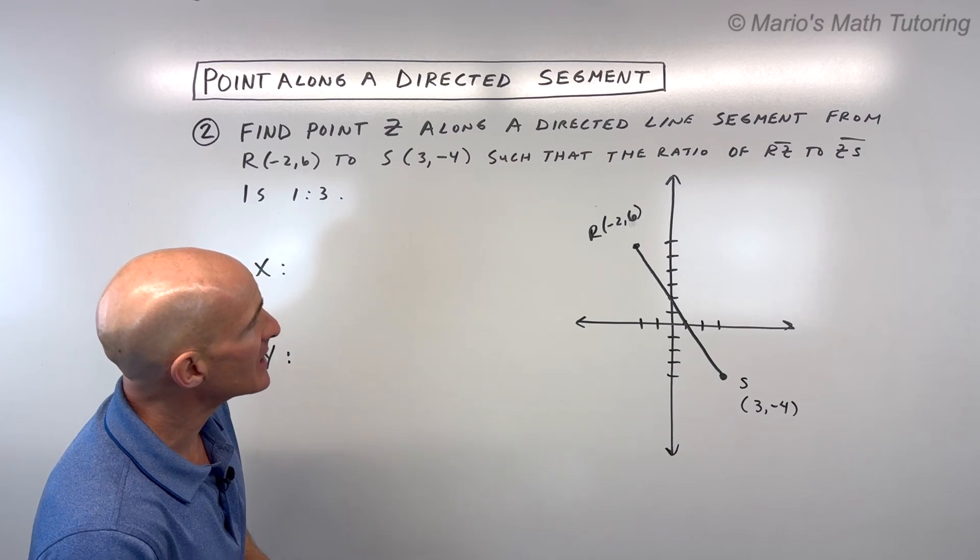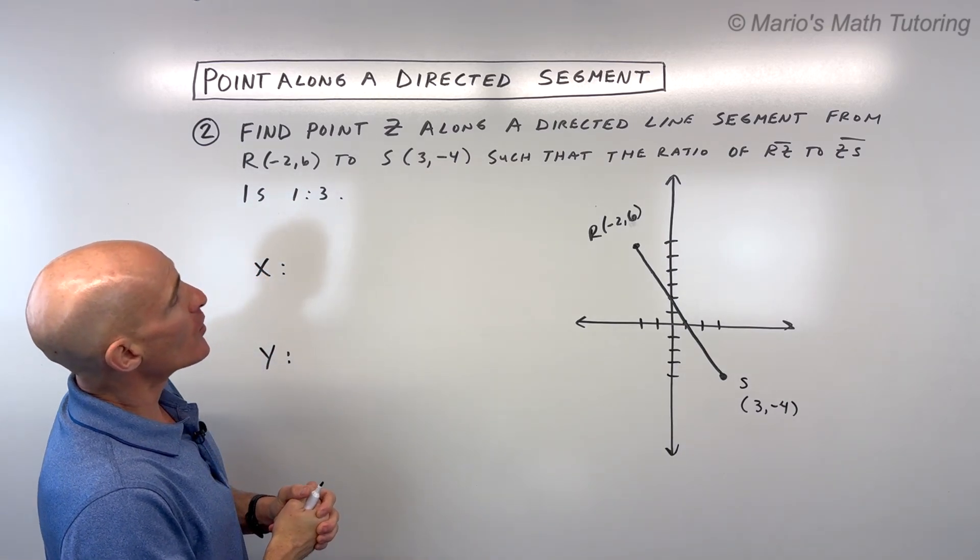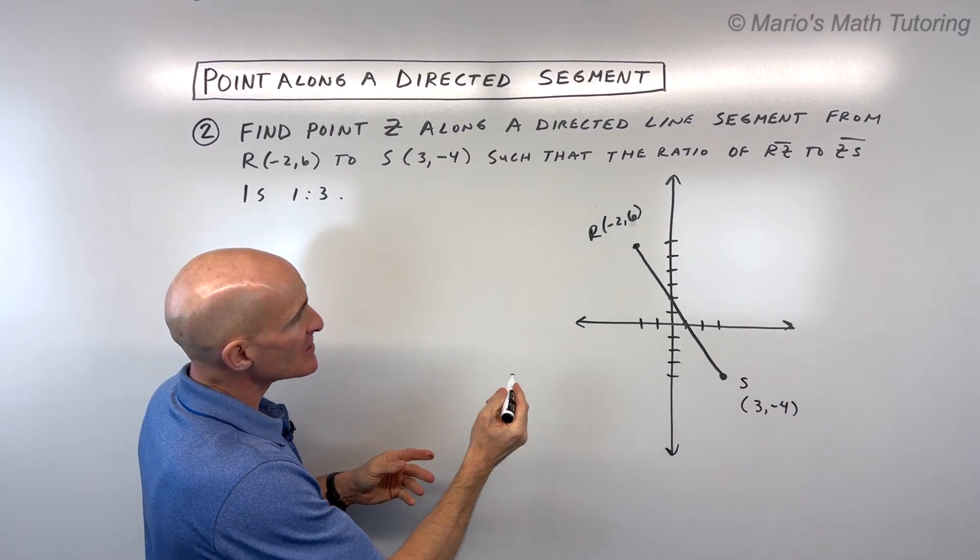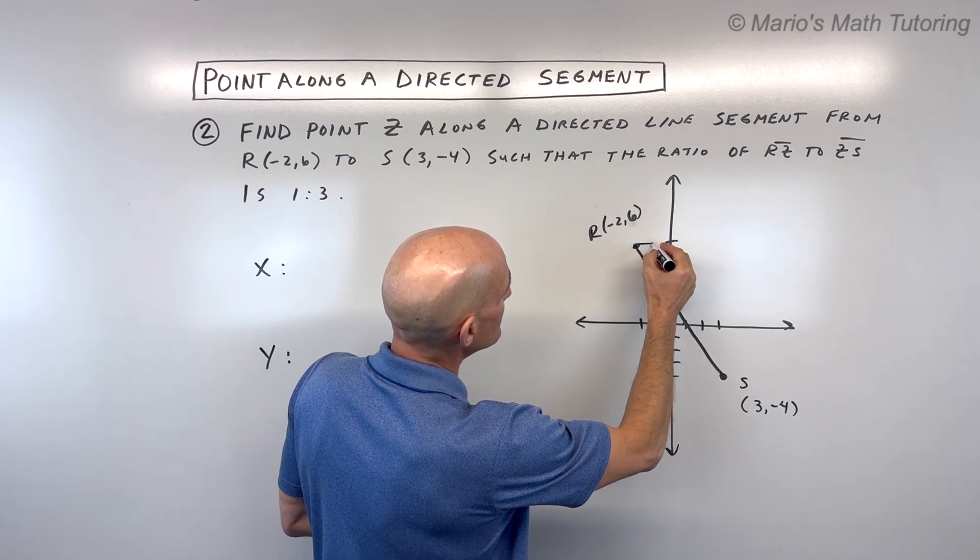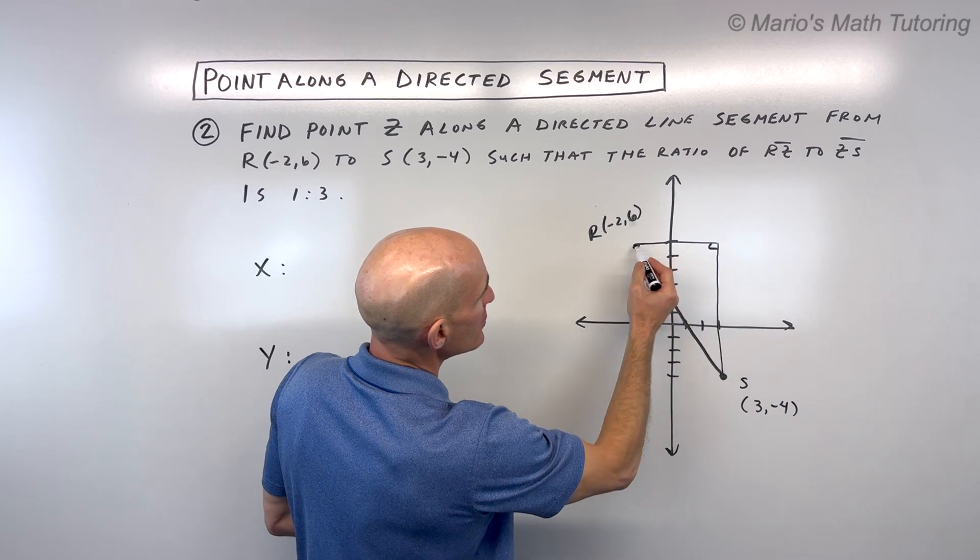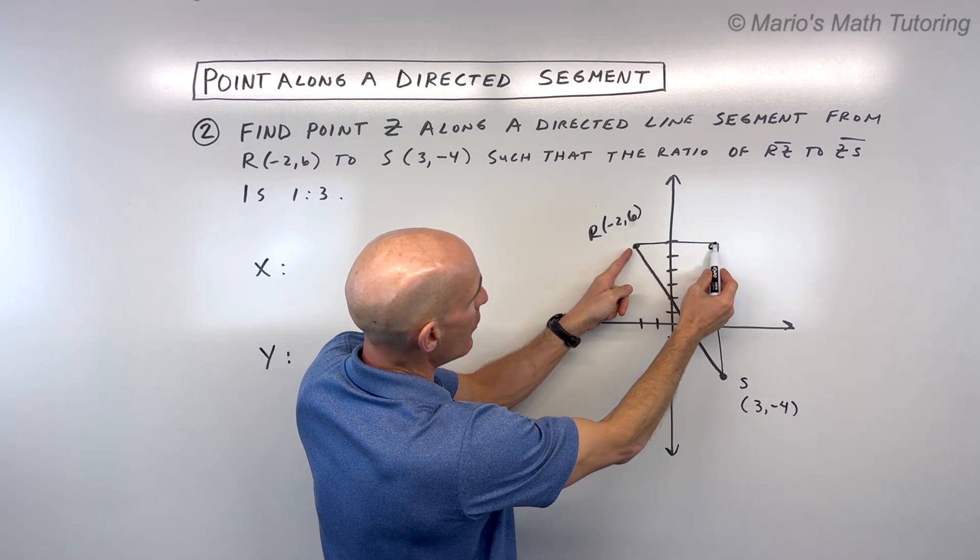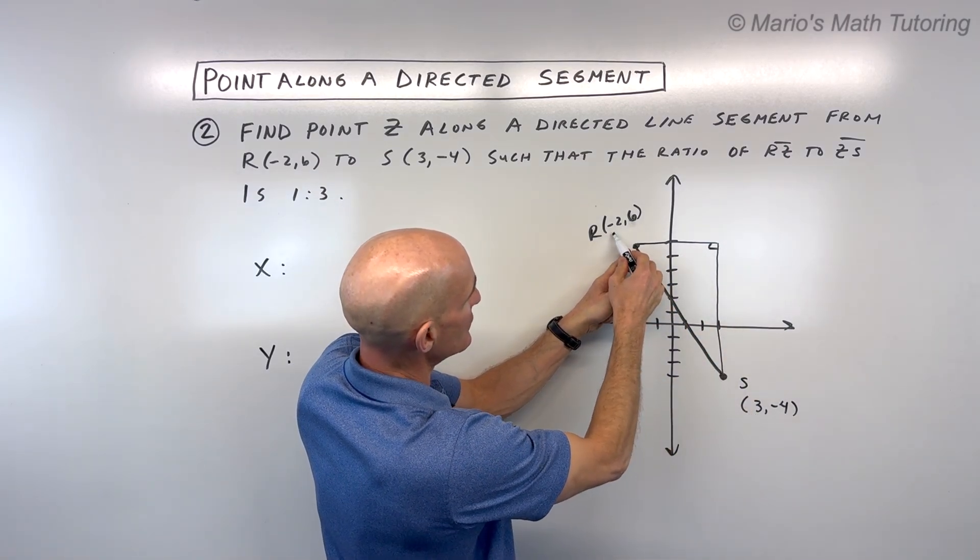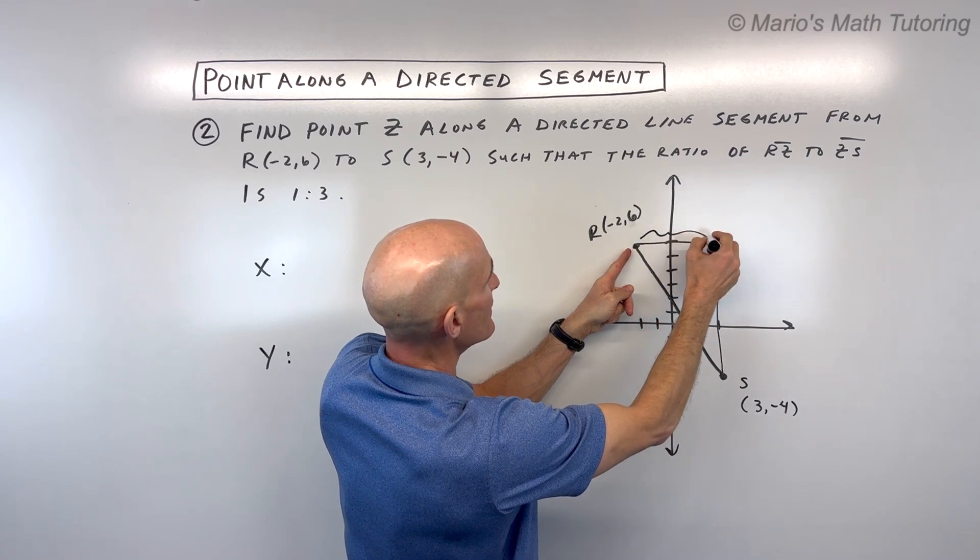And let's go over this last problem here together. So basically what I like to do is I like to make this into a triangle. So I like to kind of go like this and like this. So you can see that right angle there. Now this horizontal distance, you can either count or you can say 3 minus negative 2 is 5. So this is 5 units.